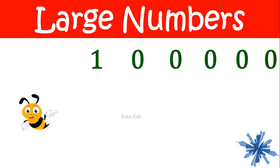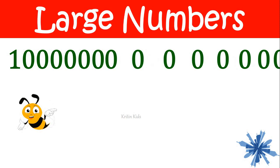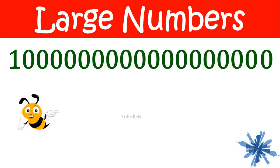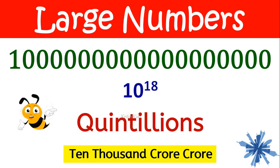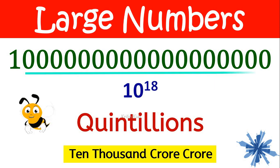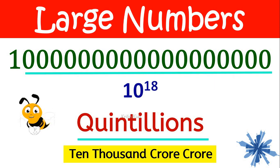Next, if I add one more zero, this becomes one quintillion, that is ten thousand crore crore. One followed by eighteen zeros gives us one quintillion.